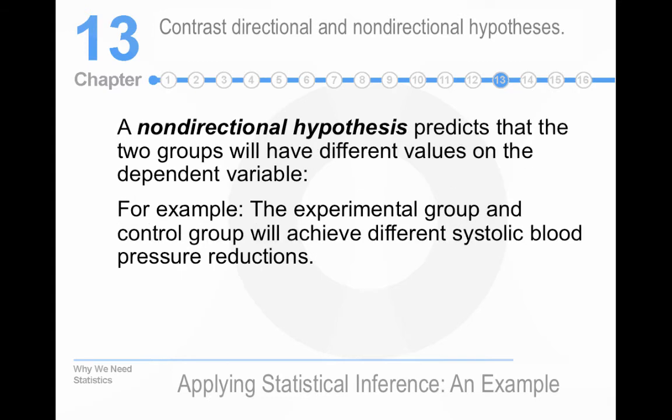You could also do a non-directional hypothesis. Two groups have different values on the dependent variable. This is also called a bidirectional hypothesis. And it says basically that we expect an impact of the independent variable on the dependent variable, but we're not sure of the direction.